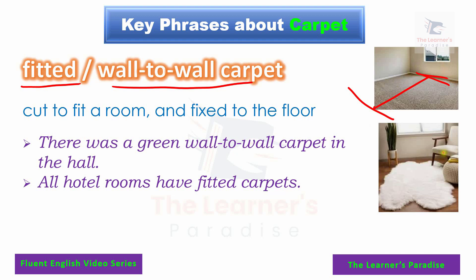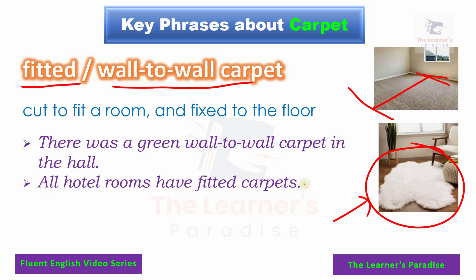On the other hand, some carpets don't cover the whole room — those are not fitted or wall-to-wall carpets. Example sentences: there was a green wall-to-wall carpet in the hall. All hotel rooms have fitted carpets.